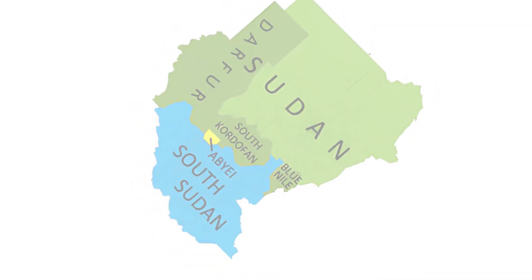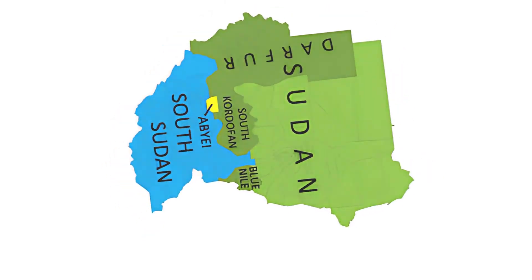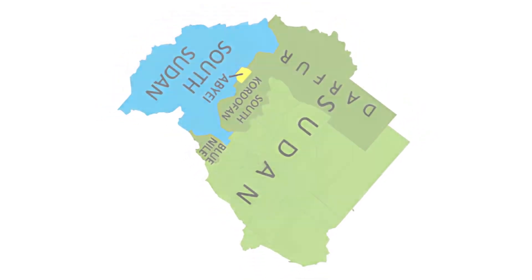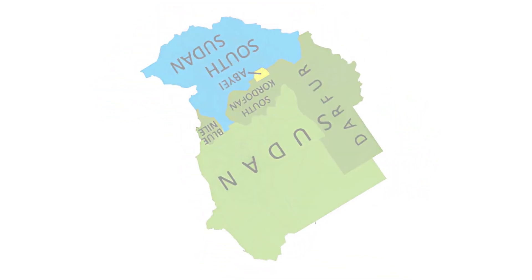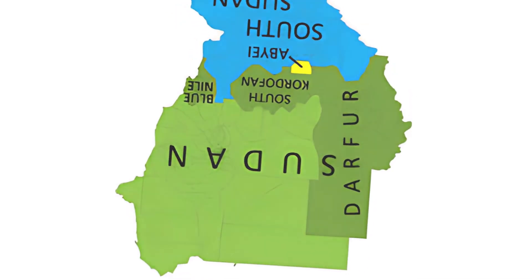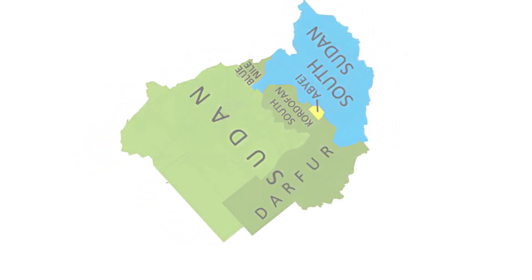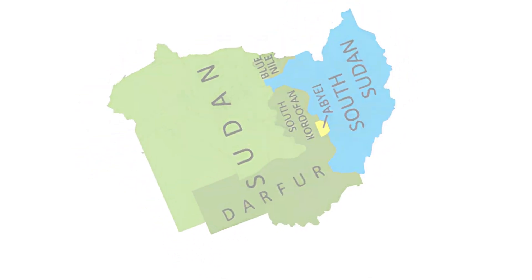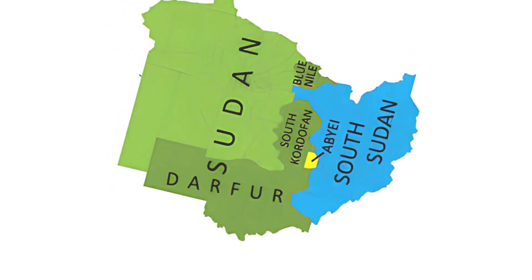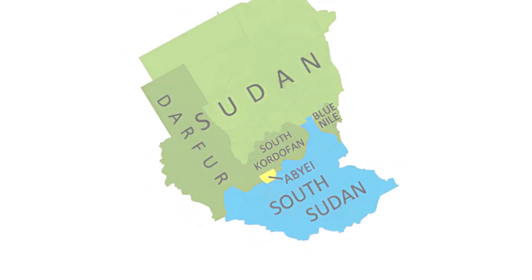Peace agreements and referendum: after years of conflict and negotiations, the Comprehensive Peace Agreement (CPA) was signed in 2005, paving the way for a referendum on South Sudan's independence. The referendum, held in January 2011, saw an overwhelming vote in favor of secession, with more than 98% of voters supporting independence. This result reflected the desire of the South Sudanese people to break away from Sudan and establish their sovereign state.